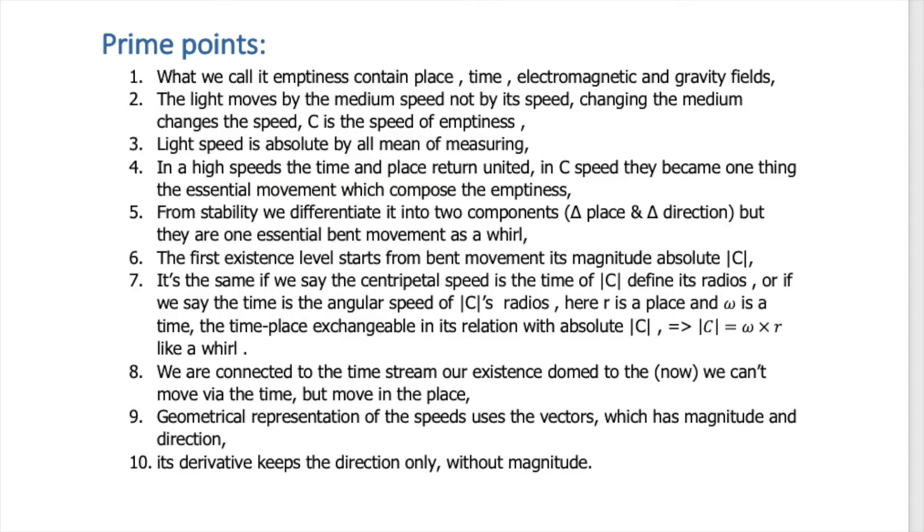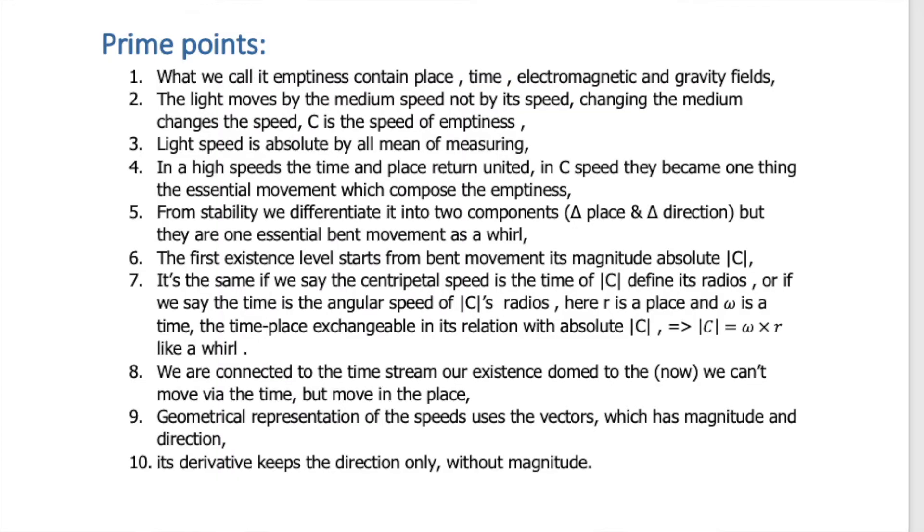We will summarize the main principles — about 25 points. First: what we call emptiness contains place, time, electromagnetic and gravity fields. The light moves by the medium speed, not by its own speed — the speed of the medium, the domain. Changing the medium changes the speed; if light goes through glass or water, the medium changes and the speed changes. Exactly when exiting one medium to another, the velocity changes.